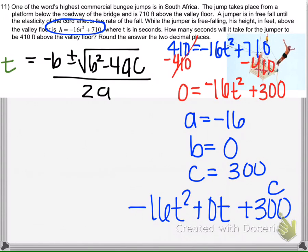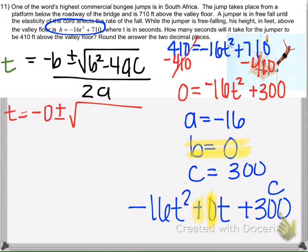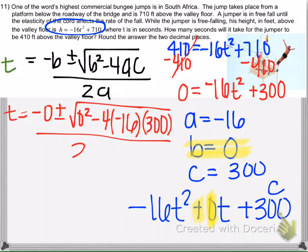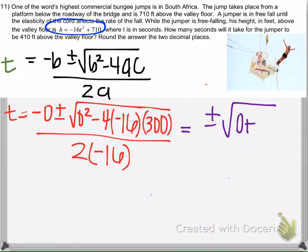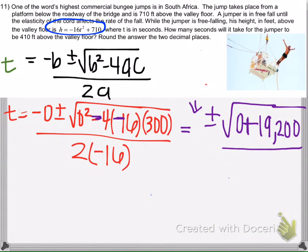This is a very popular error on tests: students will put 300 for B, but the B value is the number in front of T, and there isn't one. Now substituting our values: negative B is 0, plus or minus the square root of B squared minus 4AC, all over 2A. We get 0 squared which is 0, and then negative times negative is positive, so 4 times 16 times 300 is 19,200, divided by negative 32.